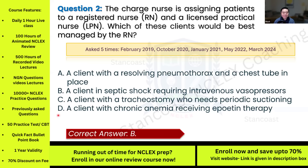Option D — a client with chronic anemia receiving epoetin therapy — is a stable, predictable scenario easily managed by an LPN under RN supervision. To recap delegation: RNs should be assigned patients who are unstable or unpredictable, whose condition could change quickly and requires in-depth care. LPNs can handle patients who are stable with predictable care needs, as long as RN oversight is available.